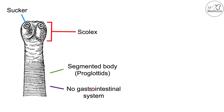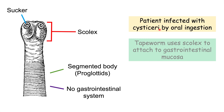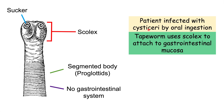A tapeworm has no gastrointestinal system, which means they have to absorb nutrients from the outside. In general, a patient is going to be infected with cysticercae by oral ingestion. Cysticercae are immature forms of a tapeworm that are ingested oftentimes in some meat product. When a patient ingests the cysticercae, they develop into an adult tapeworm.